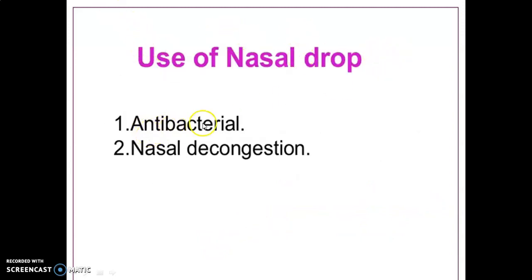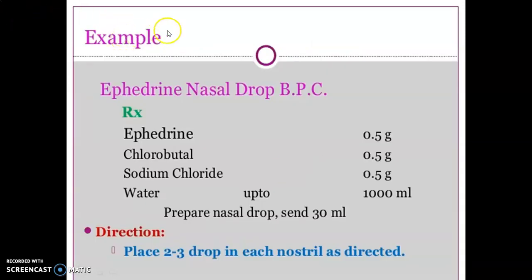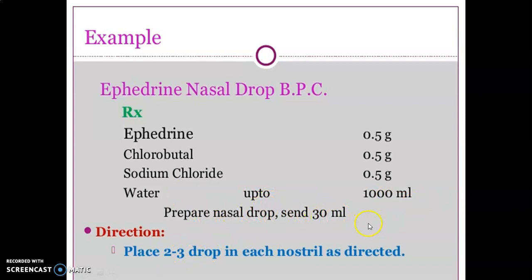Nasal drops are used as antibacterials and also used in nasal congestion. The BPC formulation (Rx) contains: ephedrine 0.5 g, chlorbutol 0.5 g, sodium chloride 0.5 g, and water up to 1000 ml. Prepare the nasal drop, send 30 ml. Directions: place two to three drops in each nostril as directed.